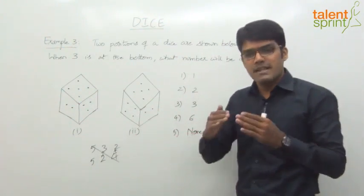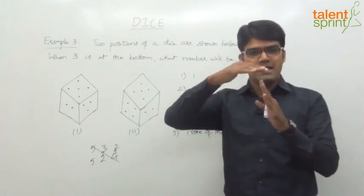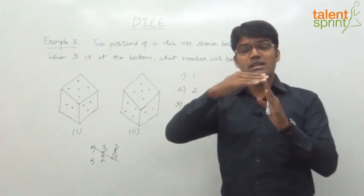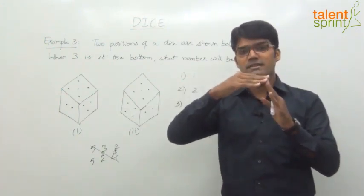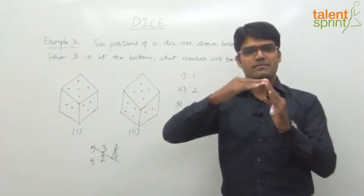As simple as that. Because understand, when two of the faces are common, this is 5, let's say top is 5 and this side is 2. What are the adjacent faces for these two faces? One will be in the front and the other will be behind. That's it.